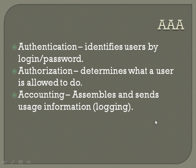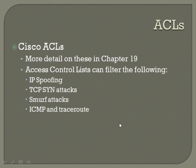Cisco ACLs — access control lists — are covered in depth in Chapter 19 on how to configure them and how they work. They're often set up to filter out IP spoofing, TCP SYN attacks, Smurf attacks — which can also be mitigated with 'no IP directed broadcast' — and ICMP and traceroute can be blocked so that ping sweeps and port scans may not be so successful.